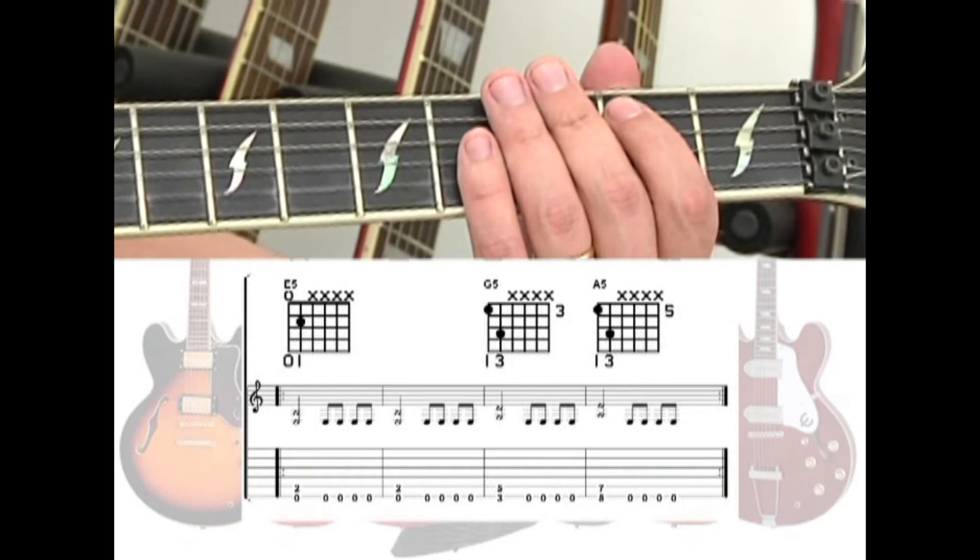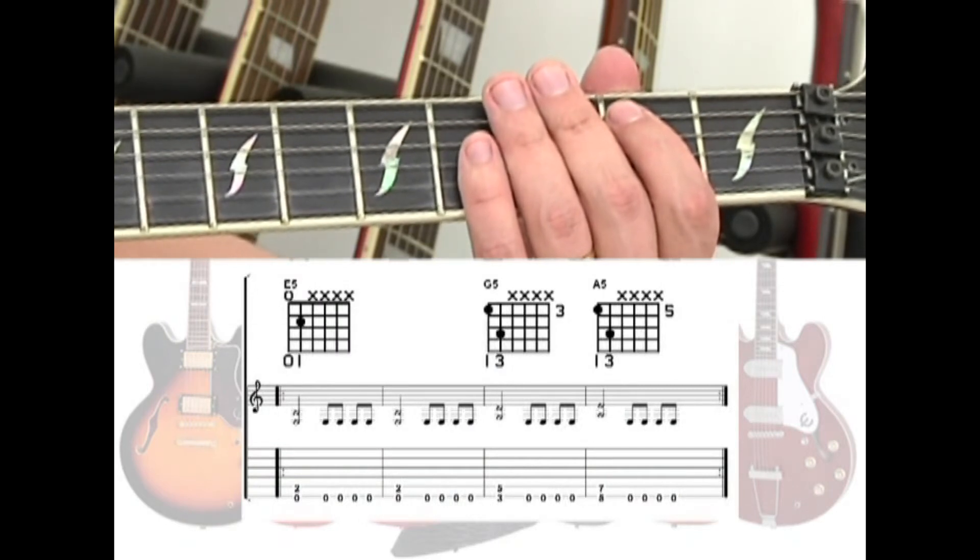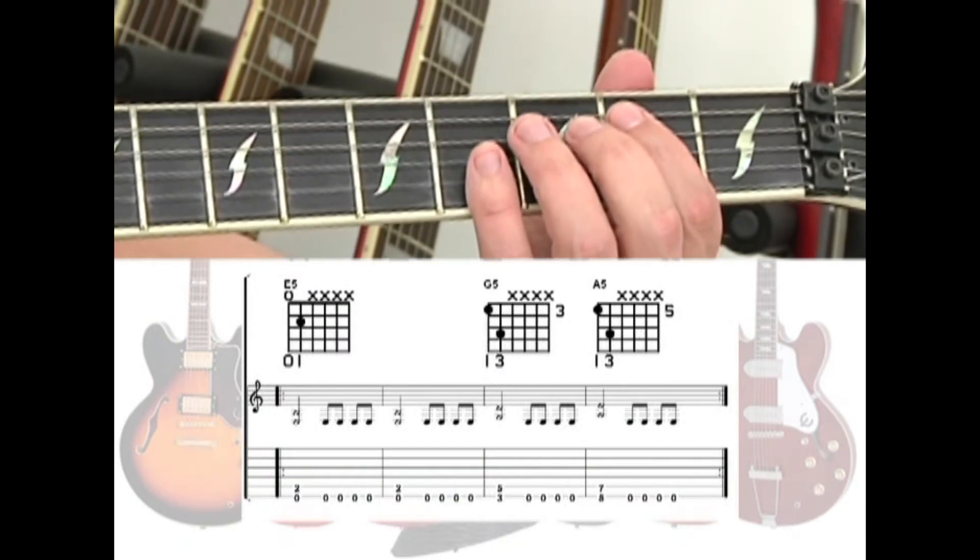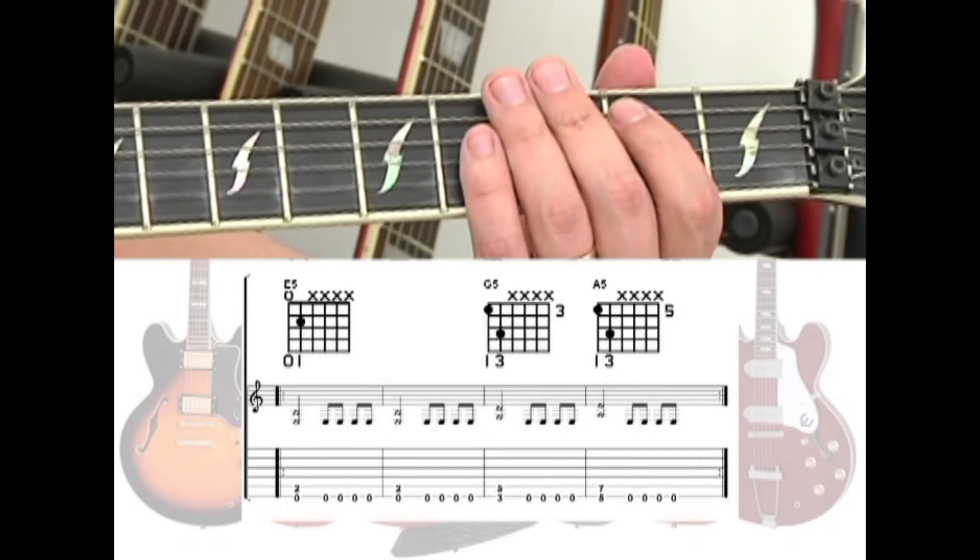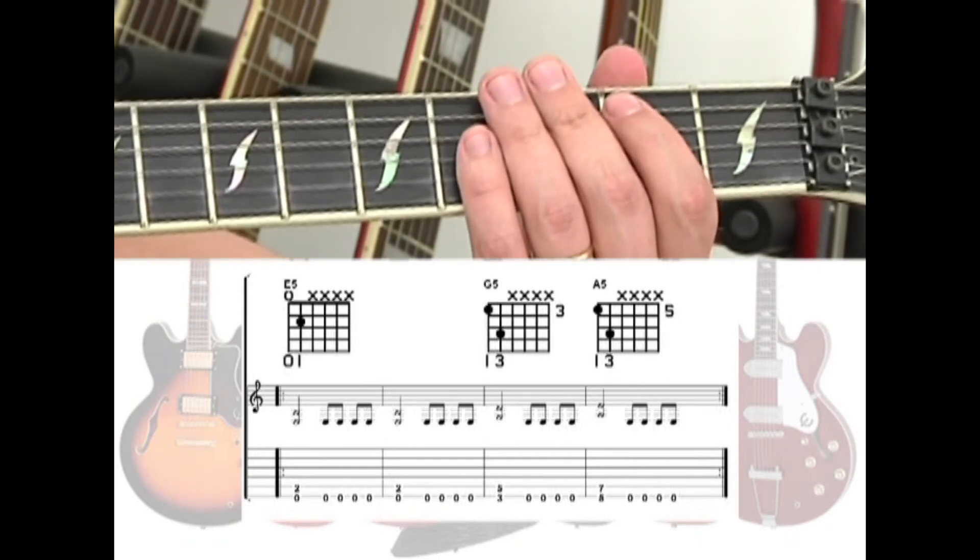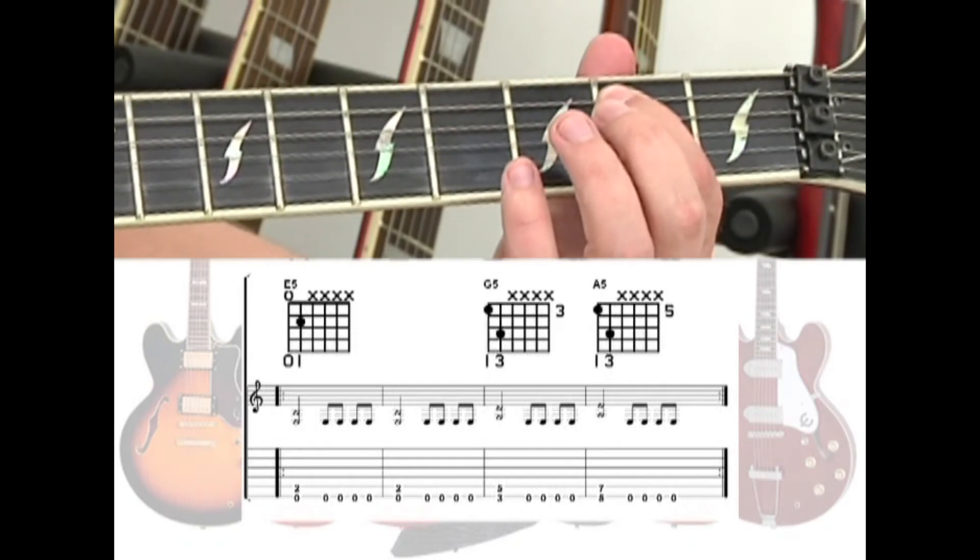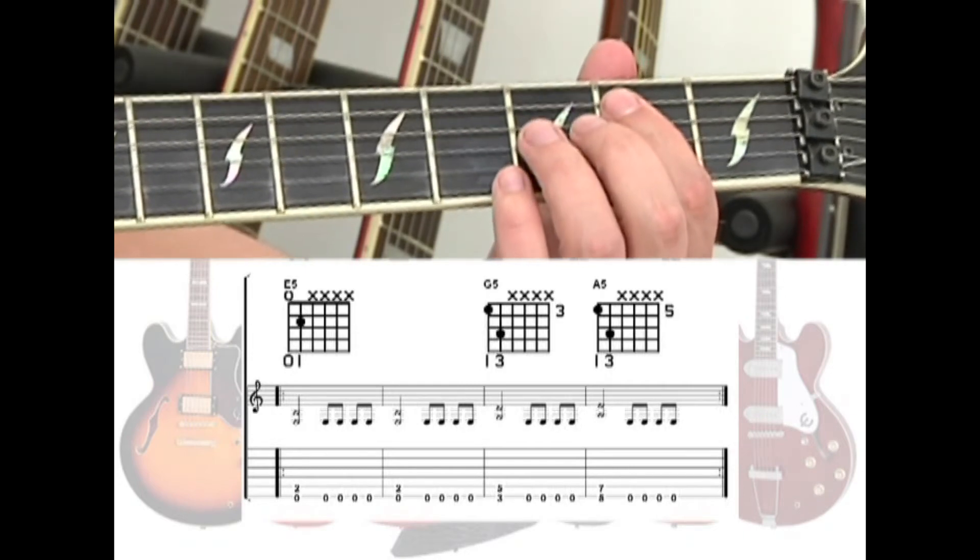For the rock song, the pedal tones come in at the middle of the measure for counts 3 and, 4 and. Repeat the E5 rhythm, playing the chord for counts one, two, then pedal tones on 3 and, 4 and.